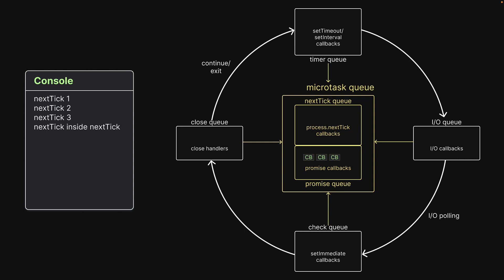The nextTick queue is now empty and control moves on to the promise queue. Promise.resolve 1 is logged, followed by promise.resolve 2. Now there is a call to process.nextTick, which adds a function to the nextTick queue. However, control is still inside the promise queue and will continue to execute the other callback functions.